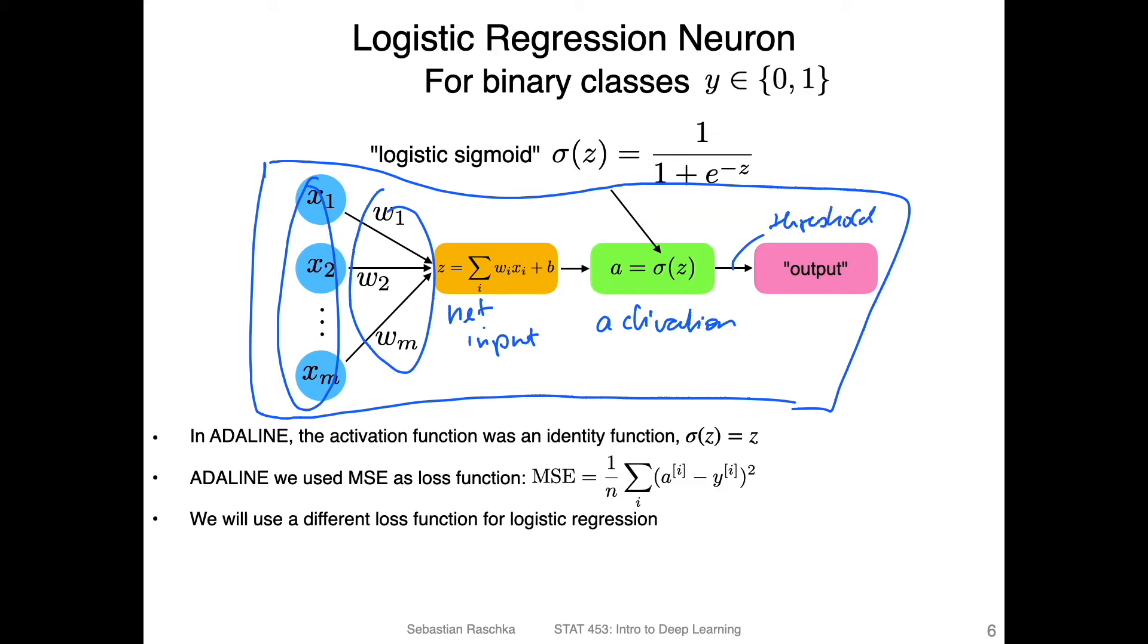But for training, we can ignore the threshold function. For training, we usually use the output from the activation. So in ADALINE, this activation function was an identity function. And in ADALINE, we used the mean squared error as a loss function. We computed it between the activation and the true class labels.